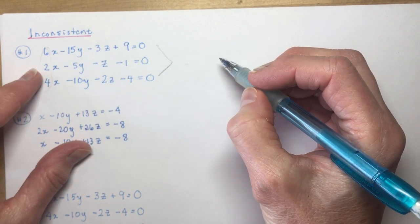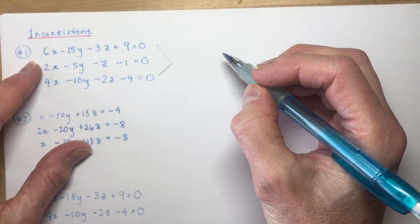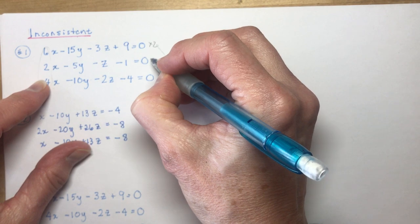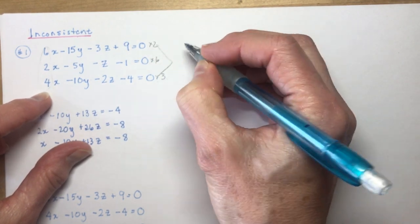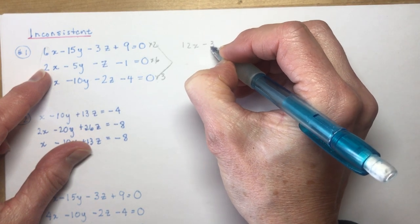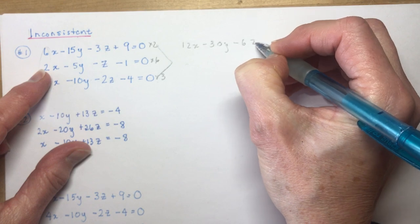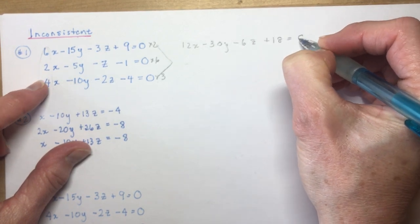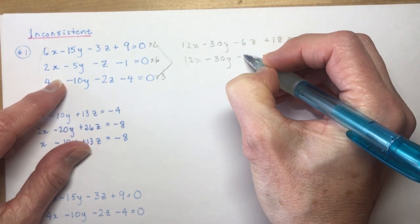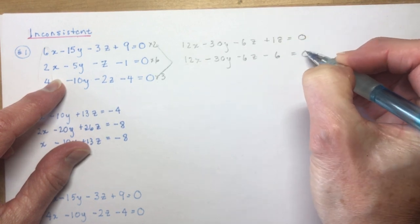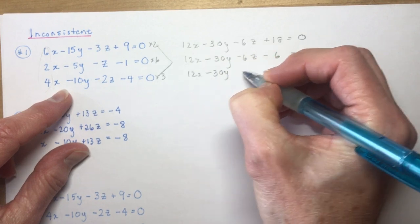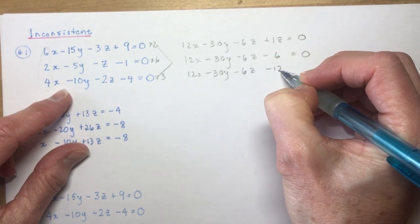That would mean a common multiple would be 12. So, I'm going to change this by 2. I'm going to do this equation times 6, and I'm going to do this equation by 3, and see what I get from my solution. So, I would have 12x minus 30y minus 6z plus 18 equals 0, and if I do this one times 6, I would have 12x minus 30y minus 6z minus 6 equals 0, and the last one times 3, 12x minus 30y minus 6z minus 12 equals 0.